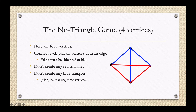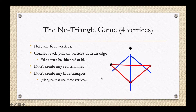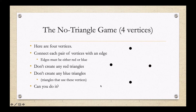When I say triangles, I mean triangles using the vertices. Something like this, if it were all red, would not count as a triangle. However, three vertices all connected with red lines does count as a triangle. So my question to you is: can you do it? And the answer is, yeah, I think so — it doesn't seem like that's hard.